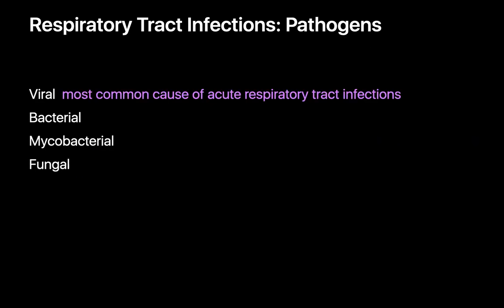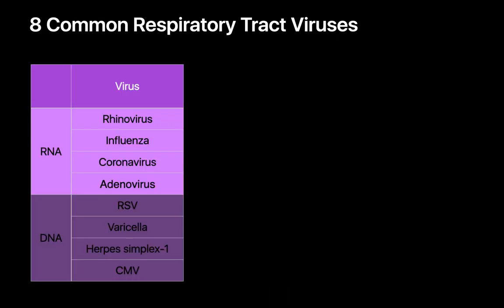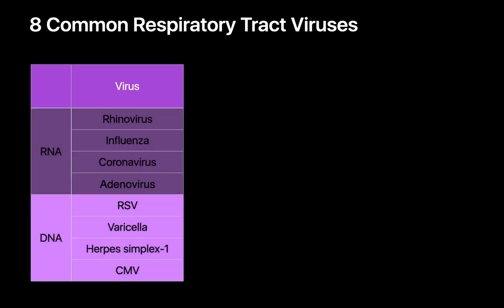Acute respiratory tract infections can be viral, bacterial, mycobacterial, or fungal infections, and on rare occasions even parasitic infections. However, viruses are the most common cause. The eight viral respiratory tract infections we most commonly encounter are rhinovirus, influenza, coronavirus, and adenovirus — RNA viruses — and RSV, varicella, HSV type 1, and CMV — DNA viruses.